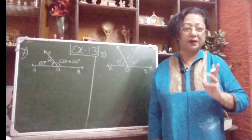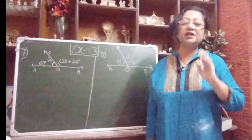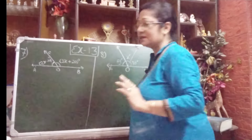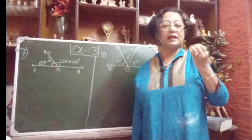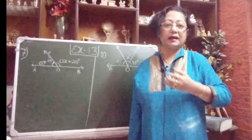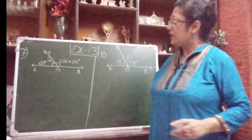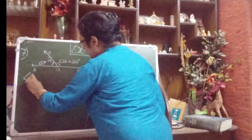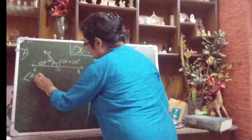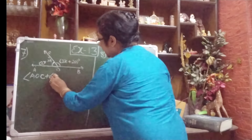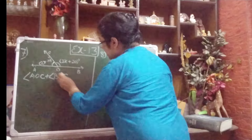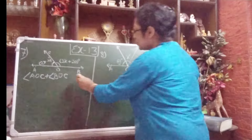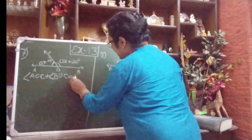If you know the property of supplementary angles, the definition makes it easy to understand. We know — and I am repeating — if we add two angles and the sum is 180 degrees, then we say these two angles are supplementary angles. So, angle AOC plus angle BOC equals 180 degrees.